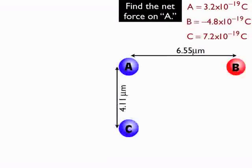So here's my example problem. I'm going to find the net force on particle A, that's the one in the top left-hand corner, and there are the charges in red. You can see the blue ones are positive and the red one is negative. The A and B charges are 6.55 microns apart, the A and C charges are 4.11 microns apart.